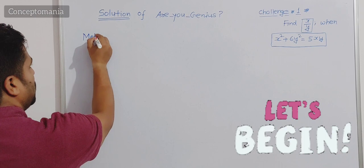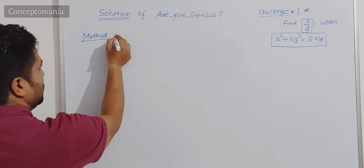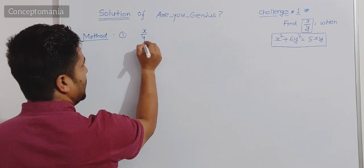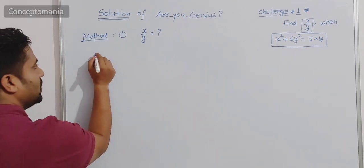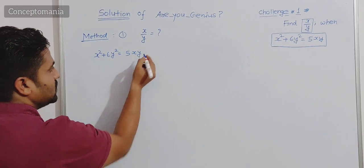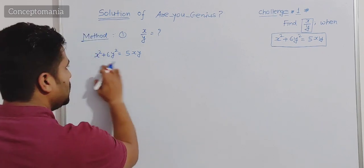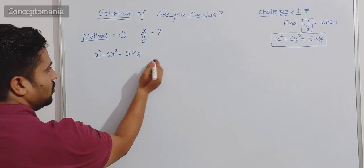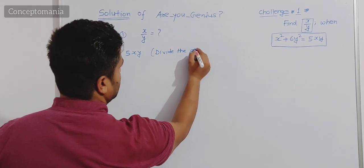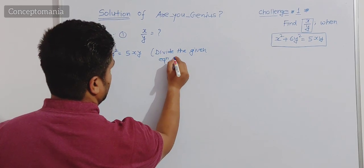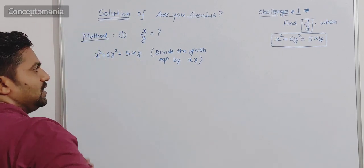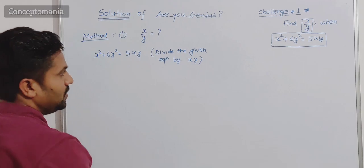Method One is the basic method. Our target is to find x upon y — what is the value of x upon y? Given is x square plus 6y square is equal to 5xy. The first method is: divide the whole equation by xy. We are doing this because we want to arrange it in a standard general form.